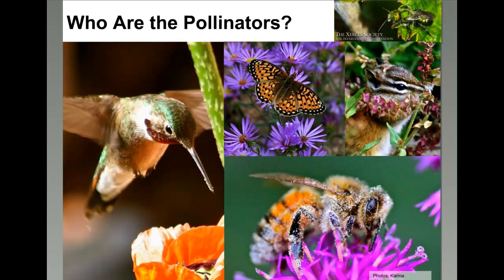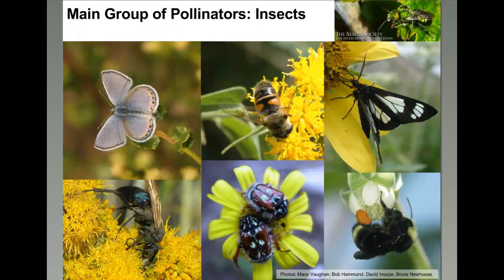Let's talk about who the pollinators are. Many people think of the honeybee first, but there are a lot of different animals that serve as pollinators — hummingbirds and other birds, small mammals, bats, and insects. Across the globe we have monkeys, lemurs, and different kinds of lizards that serve as pollinators. The main group of insect pollinators includes flies, wasps, beetles, moths, and butterflies, all visiting flowers and transferring pollen from plant to plant.